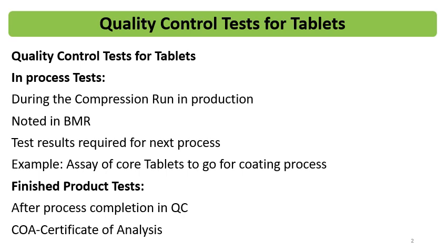Quality control tests for tablets are divided into two parts: in-process tests and finished product tests. In-process tests are those which are performed during the compression run in production. These test results are noted into the BMR and generally these in-process tests are performed by the production person and the quality assurance person handling in-process quality assurance. Test results are required for the next process. Sometimes QC testing is performed on the core tablets and based on those results, the tablets are processed for the next step — for example, core tablet test results to go for film coating or enteric coating.